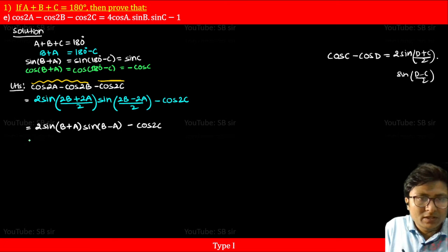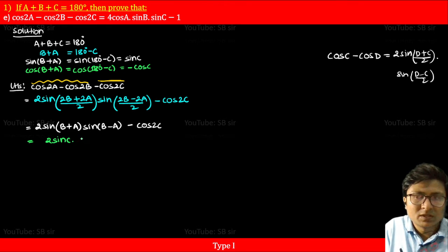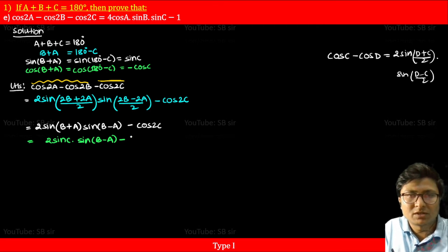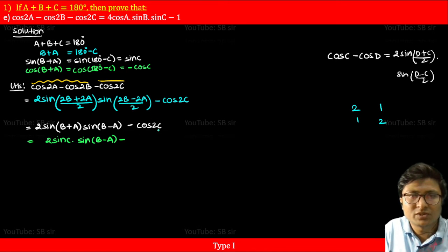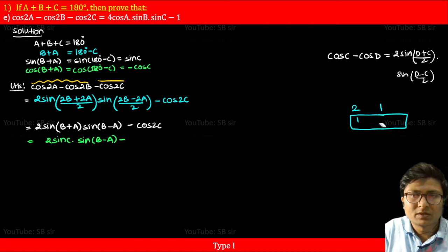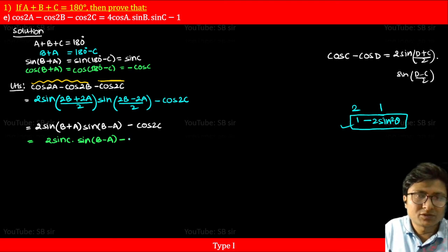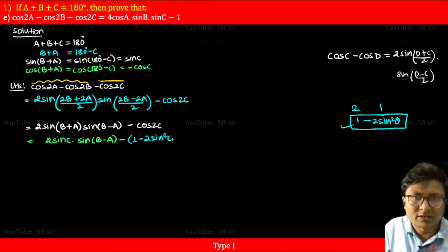So we can replace sin(b plus a) with sin c. It becomes 2 sin c times sin(b minus a), minus cos 2c. For cos 2c, we use the formula cos 2θ equals 1 minus 2 sin² θ. So cos 2c equals 1 minus 2 sin² c. Substituting: 2 sin c sin(b minus a) minus (1 minus 2 sin² c).